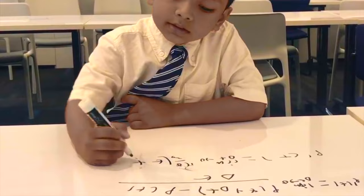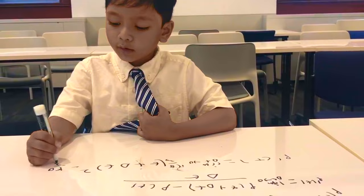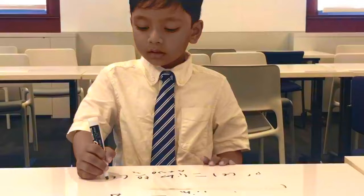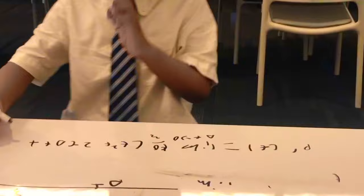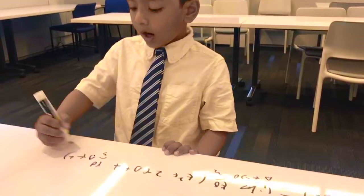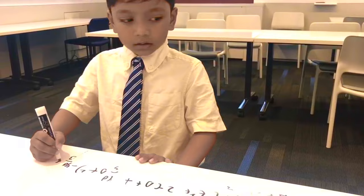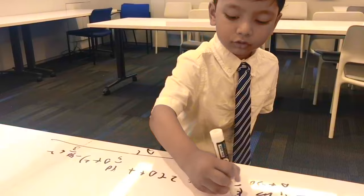40 over 3 times t plus delta t squared, minus 40 over 3t squared. That means 40 over 3 times t squared plus 2t delta t plus delta t squared, minus 40 over 3t squared, all over delta t. So we distribute to everything.